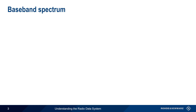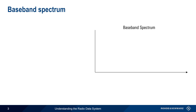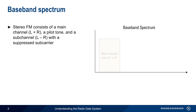Let's start by looking at how RDS information is encoded into the baseband spectrum of a stereo FM signal. Stereo FM consists of a main mono channel between 30 Hz and 15 kHz.